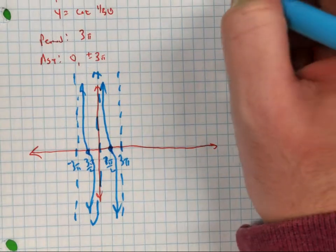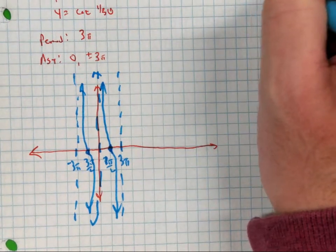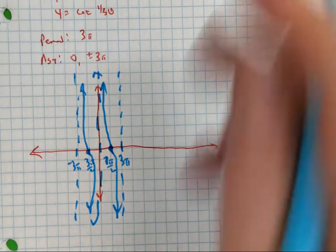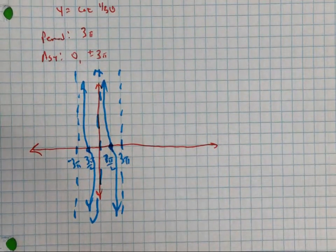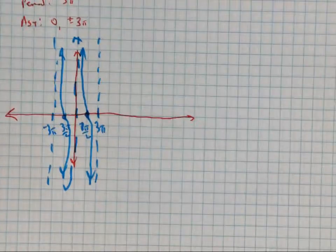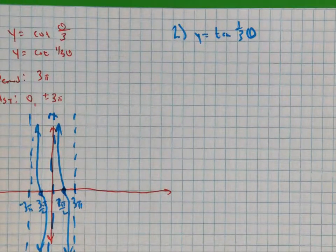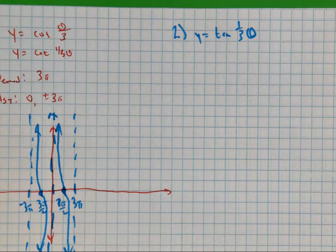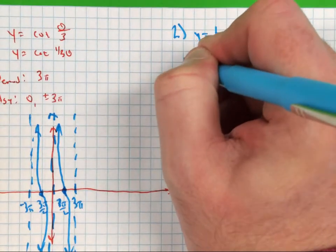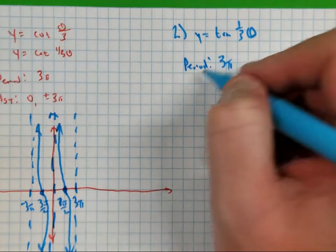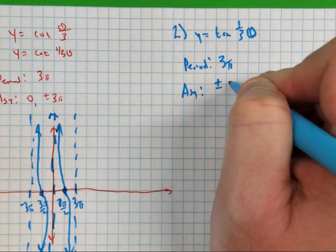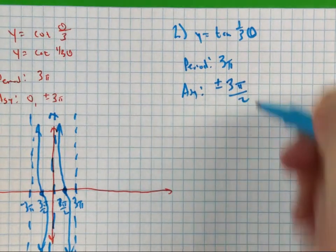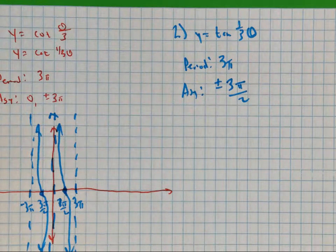Number two: tangent of one-third theta. Period is three pi again. For your asymptote, you take three pi times plus or minus one-half, so it's going to be three pi over two.